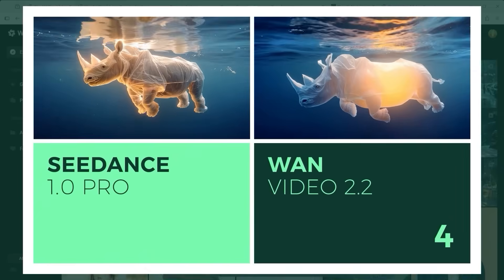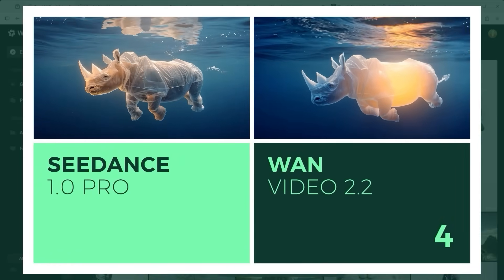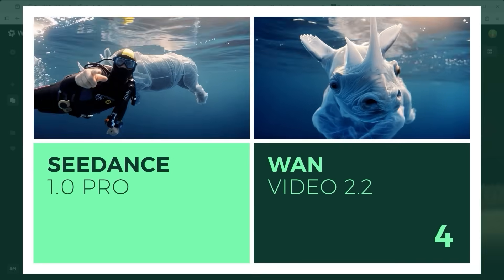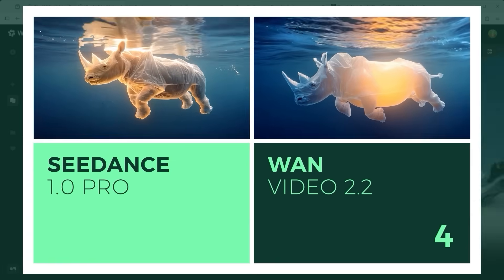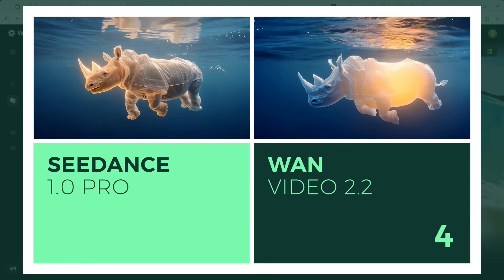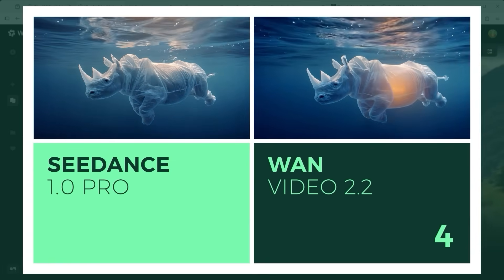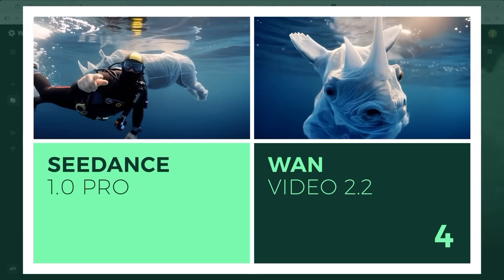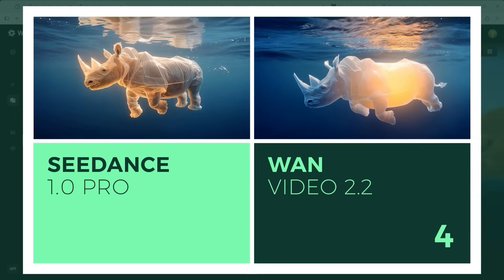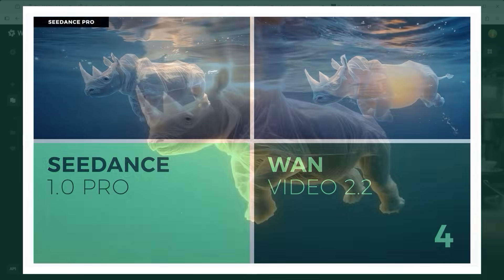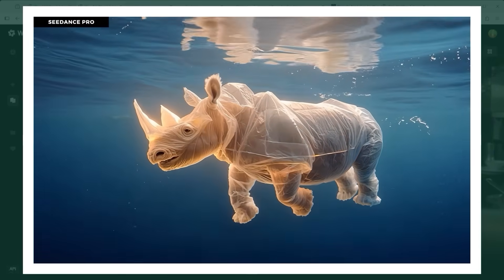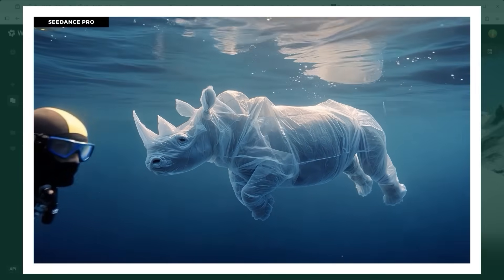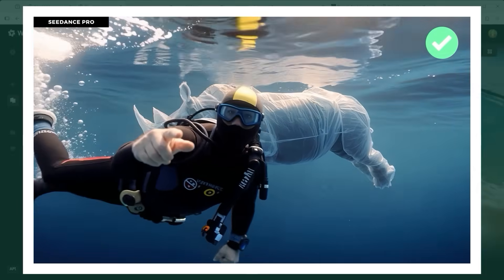Example 4: a rhino made of plastic drifting in the ocean. This test combines two clips — in part 1, the rhino starts to glow; in part 2, a diver approaches the camera. One 2.2 does a good job with the glowing effect at first, but completely misses the mark in the second part; the diver sequence doesn't follow the prompt at all. C-Dance Pro, in contrast, stays focused from start to finish. The point goes to C-Dance.